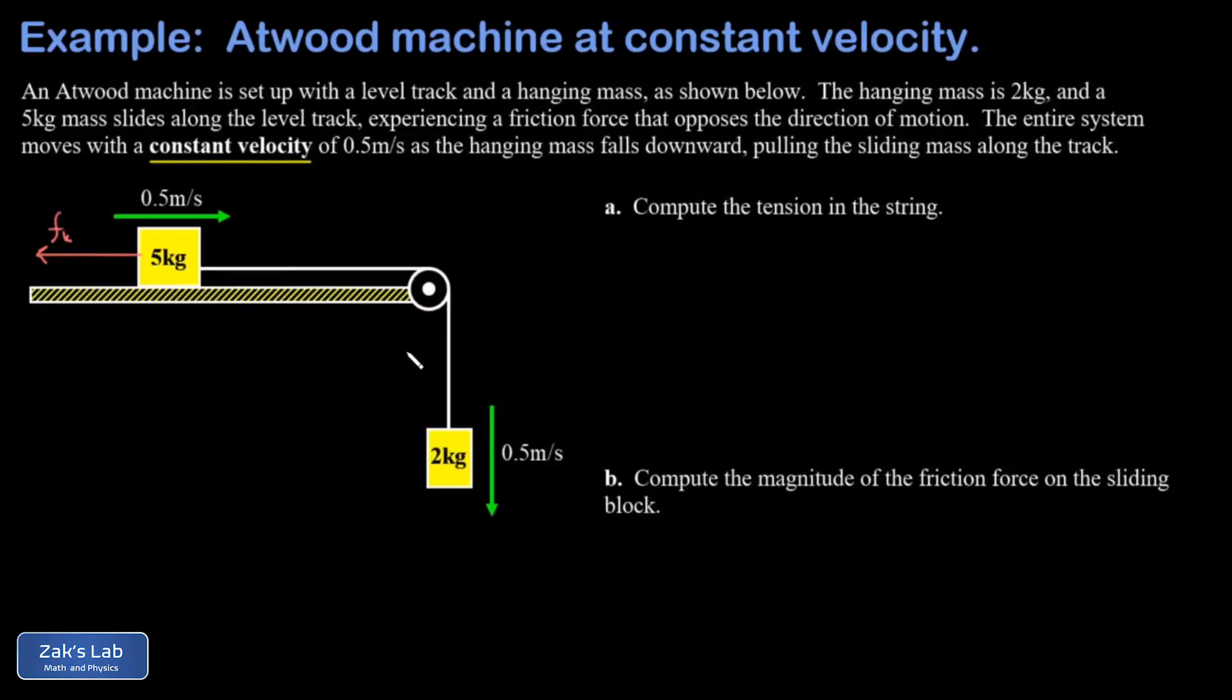We're asked to solve the Atwood machine, so we want the tension in the string and we want to find the magnitude of that friction force. We'll start by force diagramming. The second force that matters on the five kilogram block is the tension in the string.